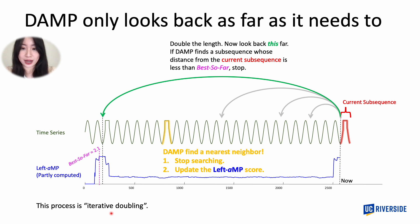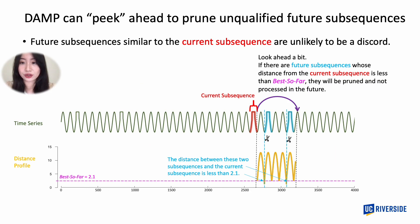Critically, we find that the vast majority of the time, iterative doubling takes only one or two tries to admissibly disqualify the current subsequence, allowing us to prune 99%+ of the search space. In addition to iterative doubling, DAMP can also prune some future subsequences to further improve speed through a forward search procedure. If there are future subsequences similar to the current one, they are unlikely to be a new discord. We use the best score so far as a criterion to prune future subsequences. Within a specific range in the future, we find two square waves similar to the current subsequence whose distances are less than the best score so far — so they cannot be a new discord and will be pruned by DAMP.